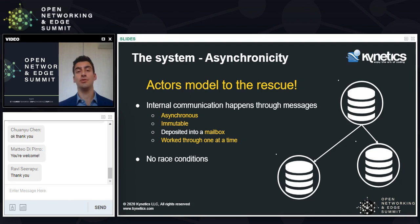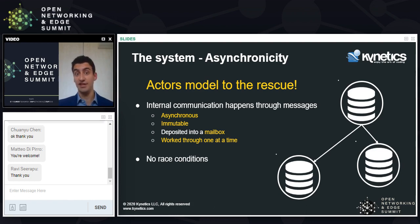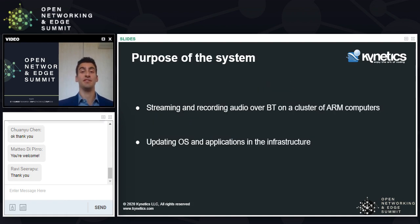If an actor wants to know the state of another actor, it sends a message. If an actor wants to modify the state of another actor, it again sends a message. By following these principles, we can ensure we'll never have race conditions, because we'll never have more than one actor concurrently trying to access or modify the same portion of state. To ensure the same thing at a global level — ensuring the coordinator's view of the system is consistent — we can generalize this model by thinking of the entire cluster as made up of actors, with all communication serialized into messages.